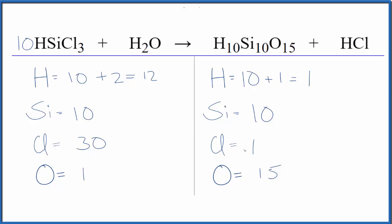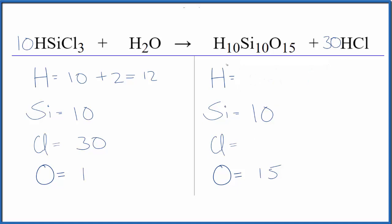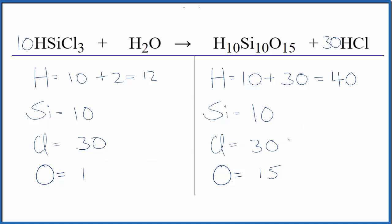We need thirty chlorines, so we're going to put a coefficient of thirty in front of the HCl product. We'll need to update the hydrogen and the chlorine. So we have the ten hydrogen atoms here, plus thirty times one is thirty there — forty total hydrogen atoms. And for chlorine, we have one times thirty, so we have thirty of those. These are balanced.